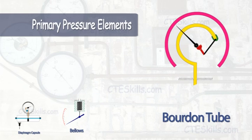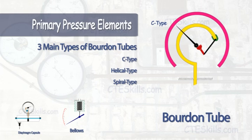Bourdon tubes are the most common type of pressure element and come in a variety of shapes including C type, helical type, and spiral. They all operate in the same general way, with the main difference being the shape of the pressure element.